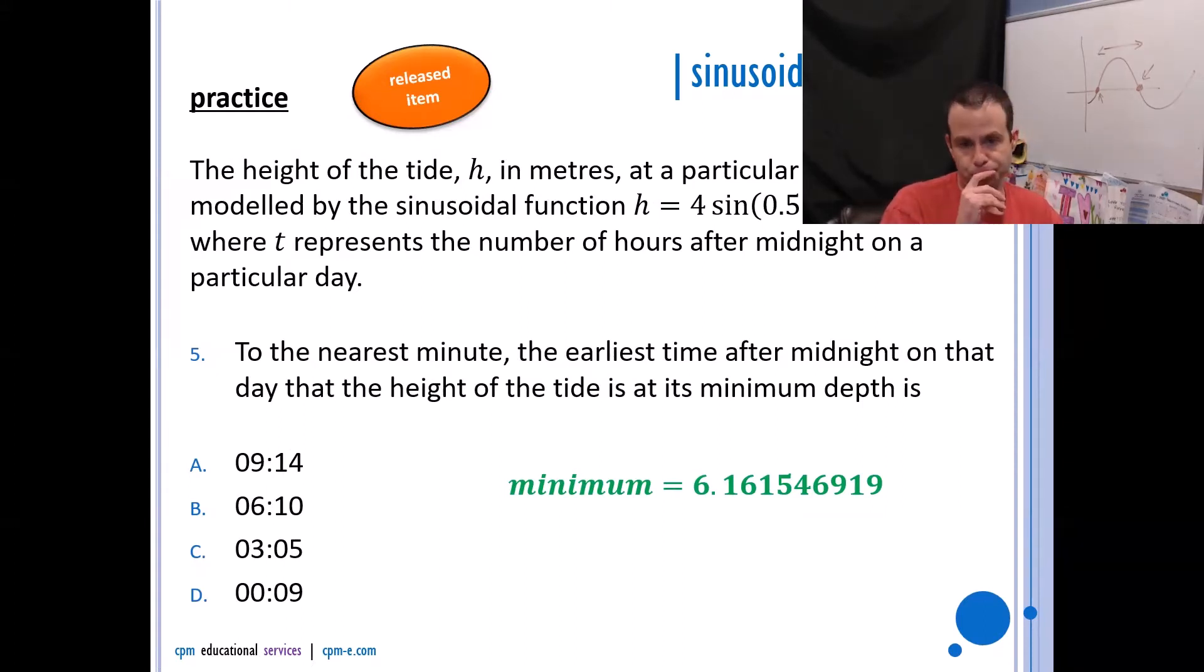First of all, let's figure out the minimum. Go ahead and graph it, and you should have that the minimum is 6.161546919. Now that does not mean 6:16 AM. It does mean six, but the 0.16, you would have to now interpret that 0.16 means 0.16 of an hour. So to convert that to minutes, you would have to times it by 60 because there's 60 minutes in an hour. So when I take that 0.16, that leftover piece of an hour, and I multiply it by 60 to convert it into minutes, I get 9.6 minutes. So it's 6 hours and 10 minutes after midnight, or 6:10.